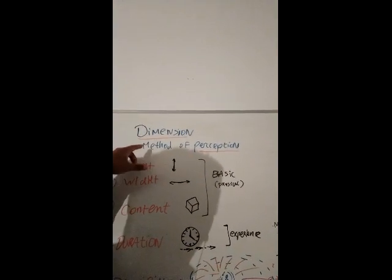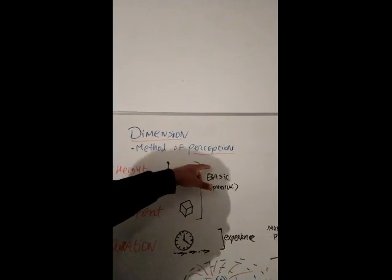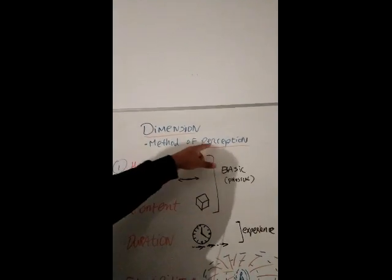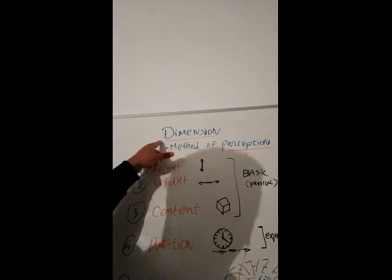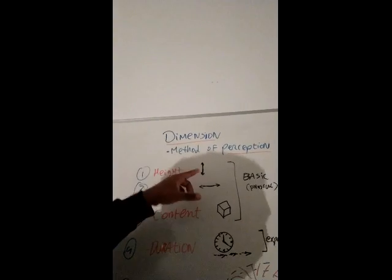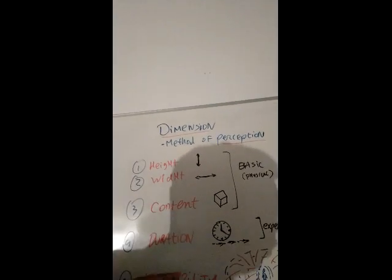A dimension is a method of perception. So a dimension is simply how you perceive something that's out there. A dimension is also a level on the way to influence the physical world around you.